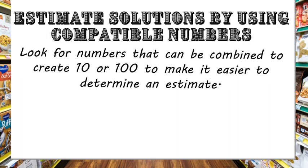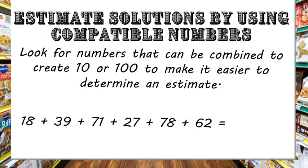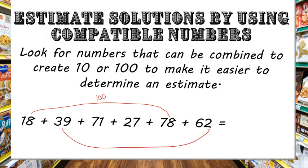For example, when adding 18 plus 39 plus 71 plus 27 plus 78 plus 62, I can estimate the sum by combining numbers that estimate to 100. 18 and 78 should be close to 100. 39 and 62 will be near 100. 71 and 27 would add up to close to 100. So that's three hundreds, meaning this list must add to somewhere around 300.